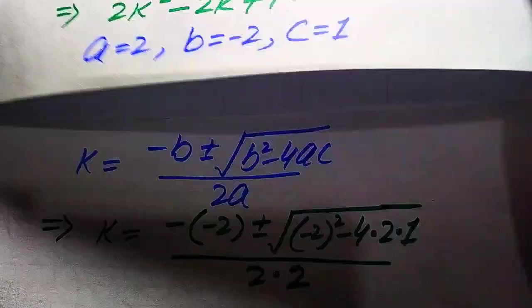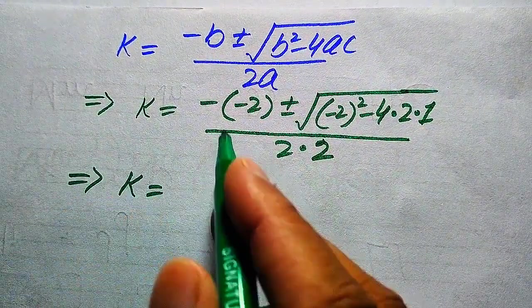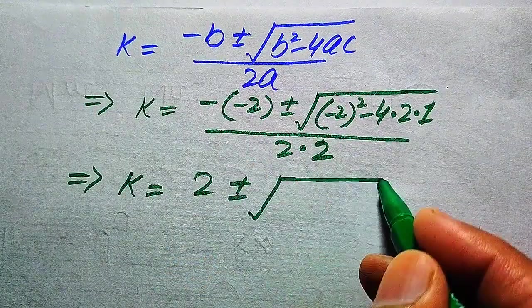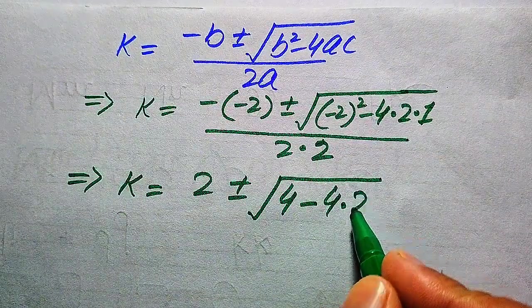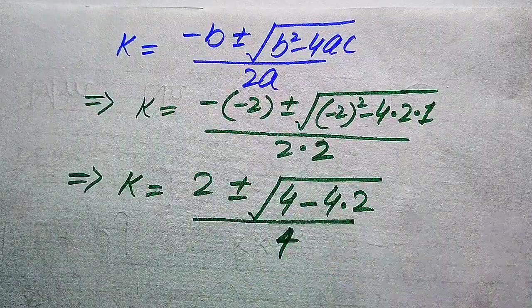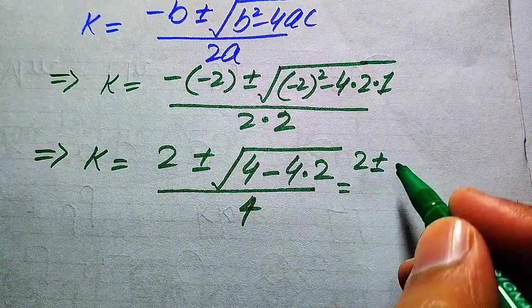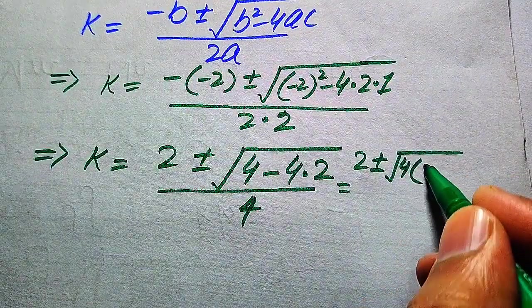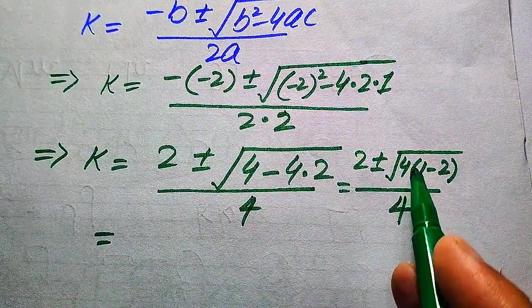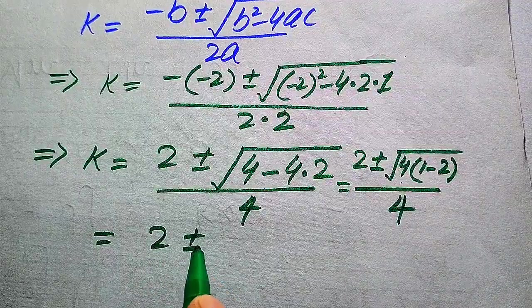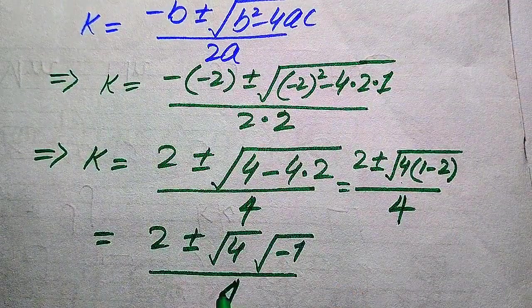Simplifying: minus times minus gives plus 2, and (minus 2)² is 4, so we have k equals 2 plus or minus square root of (4 minus 4·2) divided by 4. Inside the square root we have 4 as a common factor; factoring it out gives square root of 4 times (1 minus 2), divided by 4.